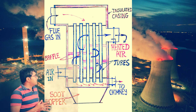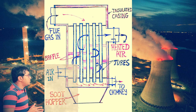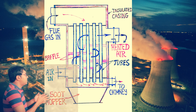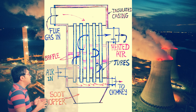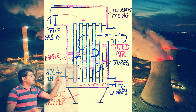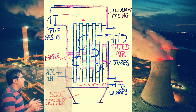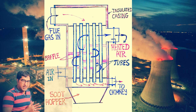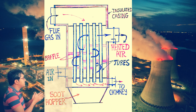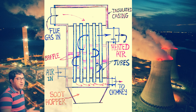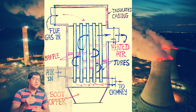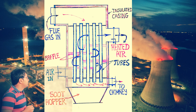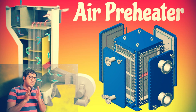The air preheater is also a type of heat exchanger — as the name suggests, it preheats the air. The heat energy available in the flue gases is used to transfer heat to the air in the air preheater. There is an exchange of heat between the flue gases and the air, the temperature of the air increases, and this hot air is supplied to the boiler. Supplying hot air to the boiler increases the combustion efficiency of the boiler.